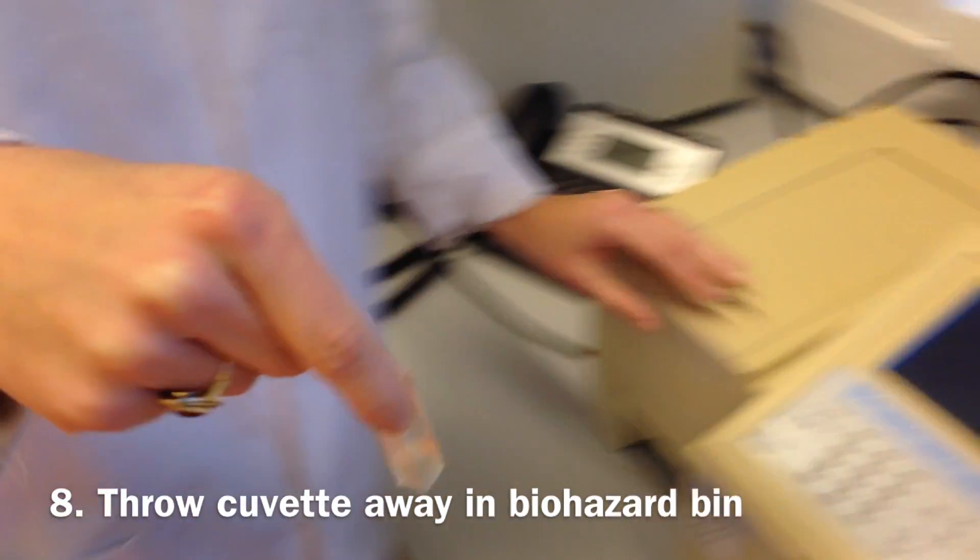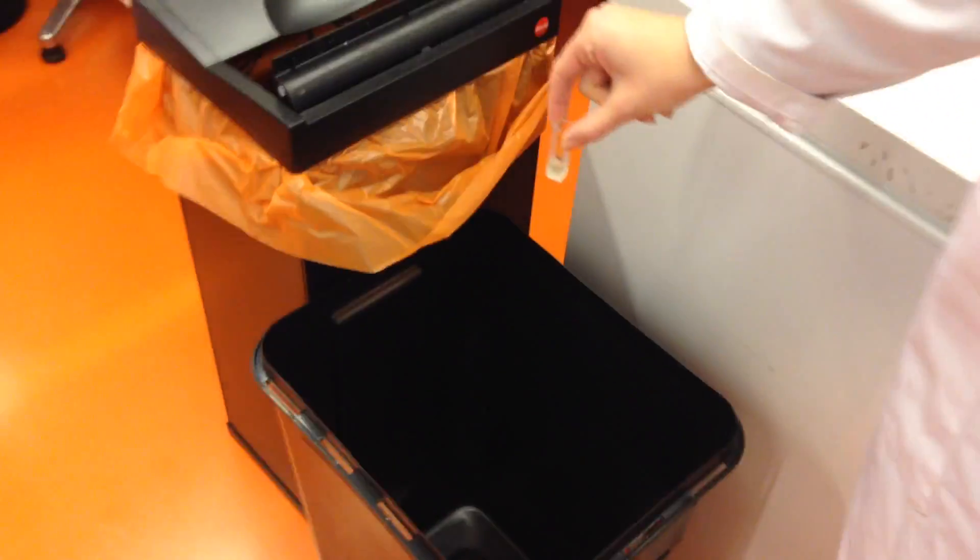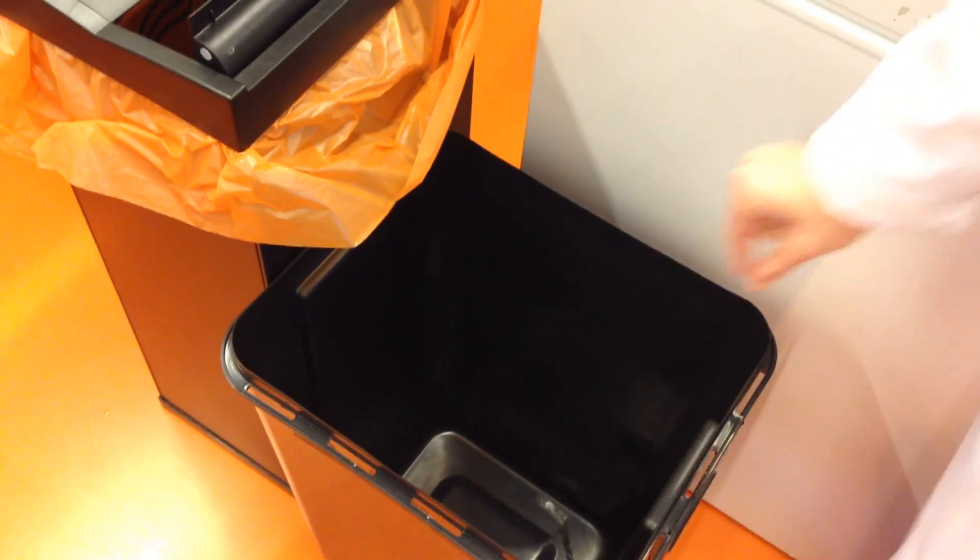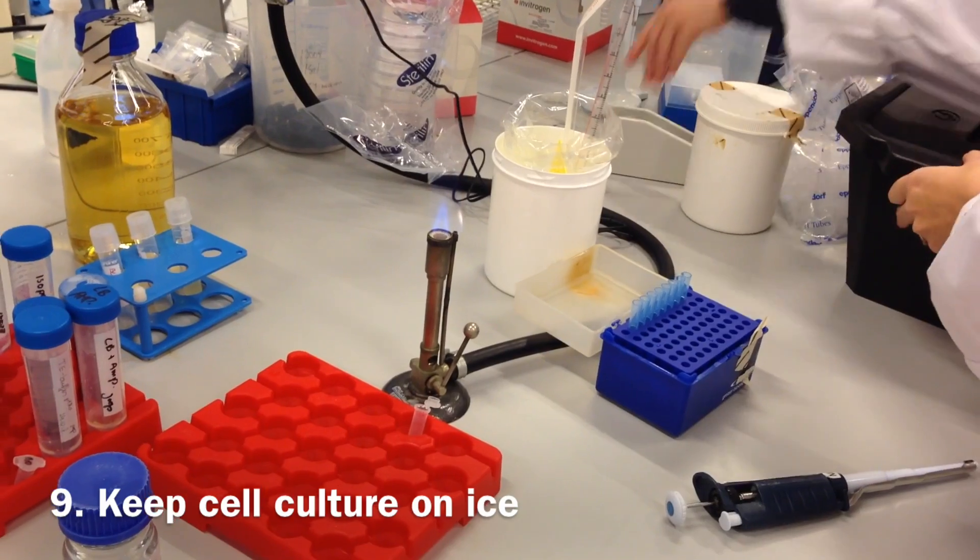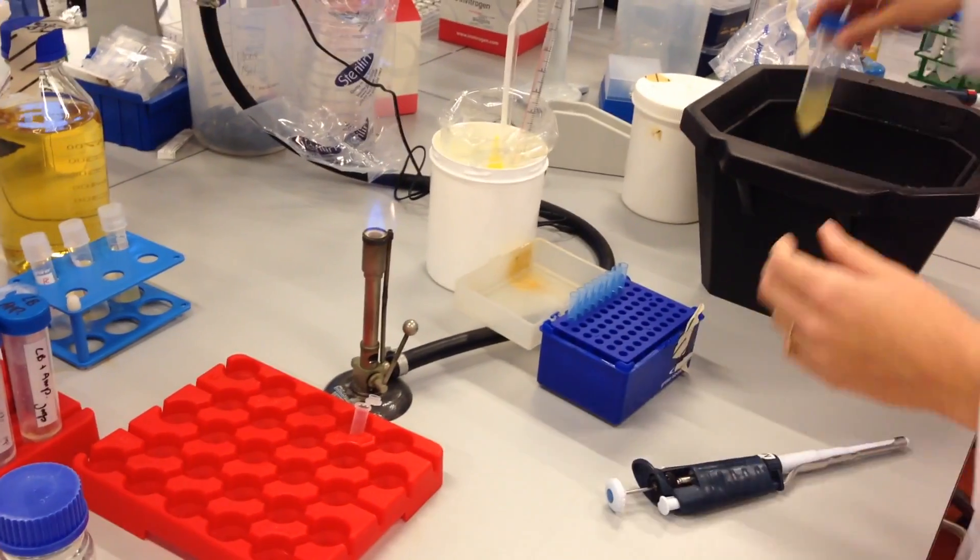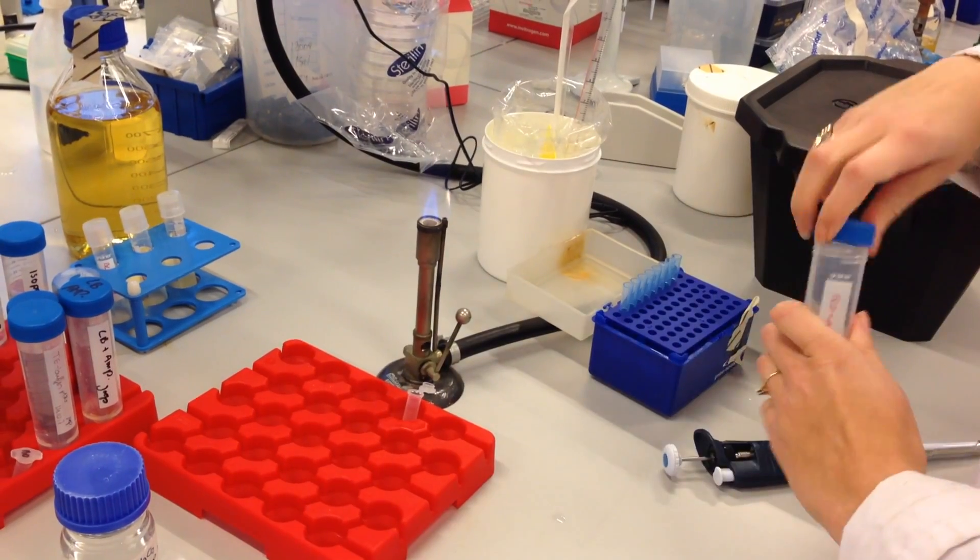Once the cell culture has been read, the used cuvette, as well as any other used materials, must be thrown away in the biohazard bin. Once the optical density has reached 0.7 to 0.8, the cell culture must be removed from the incubator and put on ice to prevent the cells from growing any further.